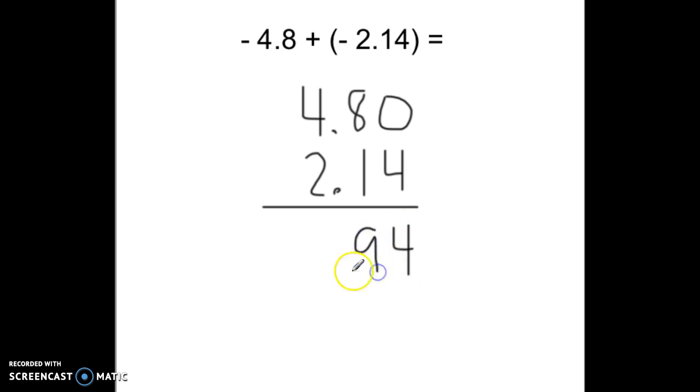Fairly simple. And we get 6.94. Don't forget to put in your negative sign because a negative and a negative means we're going to have a negative result.